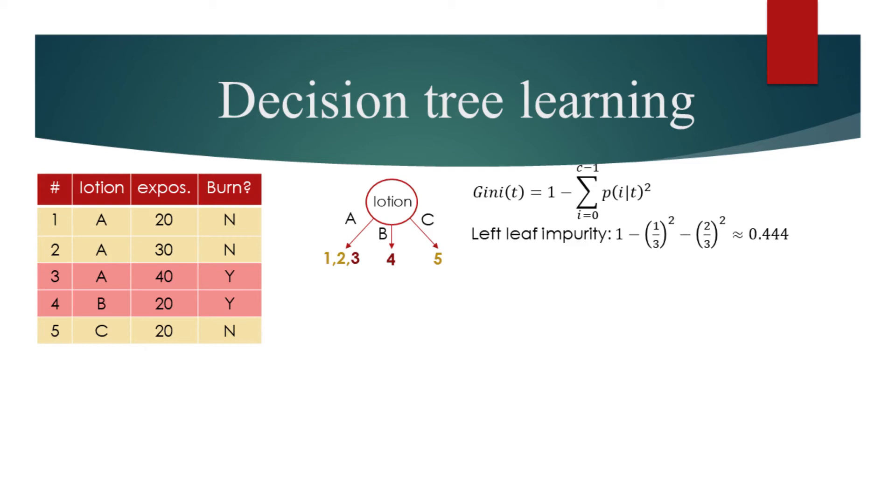Rest of the leaves are pure and have a Gini impurity of 0. We can calculate the total impurity for this split by taking the weighted sum of the leaf node impurities. Impurity where 3 out of the 5 samples end up equals 0.44 and rest of the leaves have an impurity of 0. Thus, the total impurity would be approximately 0.27.